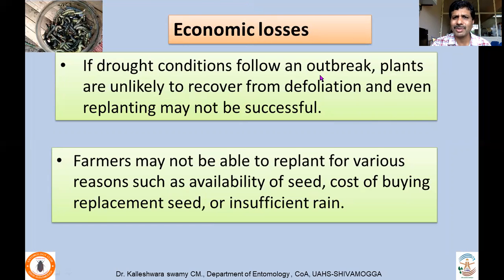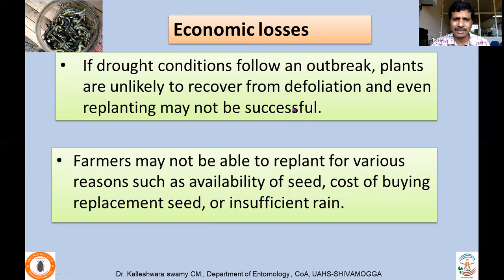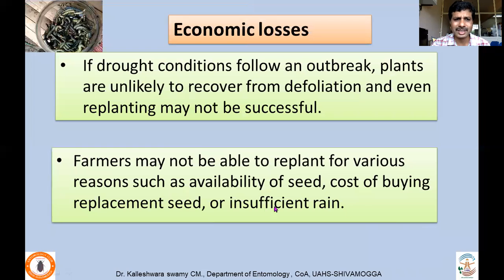If drought conditions follow an outbreak, plants are unlikely to recover from defoliation. If there is good soil moisture and the farmer manages the pest with no recurrence, recovery is possible and farmers may get at least some yield. But if drought happens after damage, plants do not recover. Farmers may not be able to replant due to various reasons — there may not be good seed availability, the cost of buying replacement seed adds to cultivation costs, they may lose the season, and insufficient rain in the later part of the season can lead to total loss.